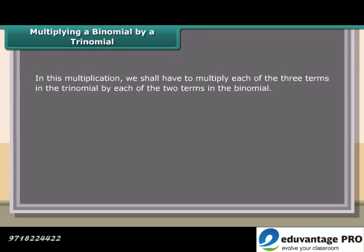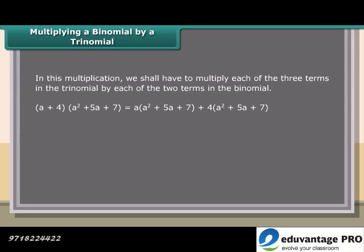Multiplying a binomial by a trinomial: in this multiplication, we multiply each of the three terms in the trinomial by each of the two terms in the binomial. For example: (a plus 4)(a² plus 5a plus 7) equals a(a² plus 5a plus 7) plus 4(a² plus 5a plus 7).